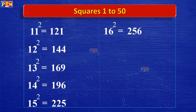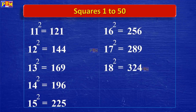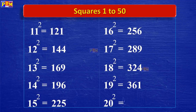17 squared is 289. 18 squared is 324. 19 squared is 361. 20 squared is 400.